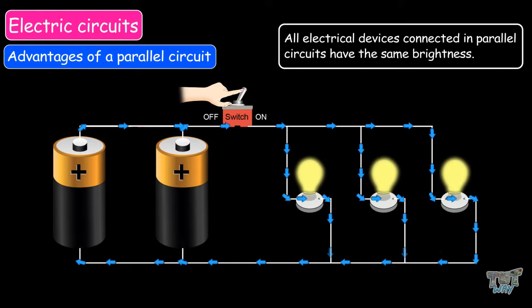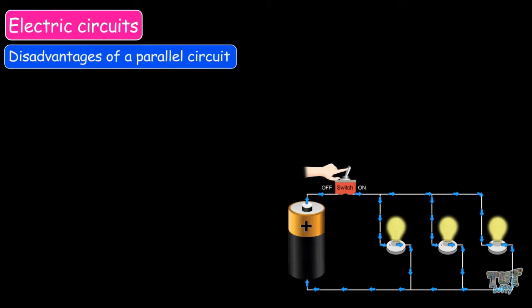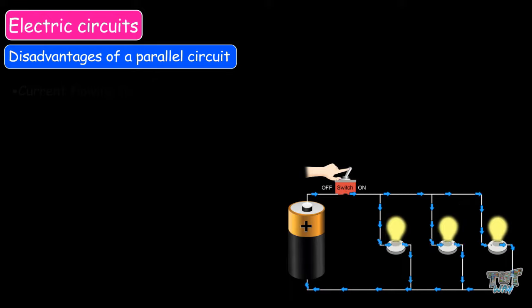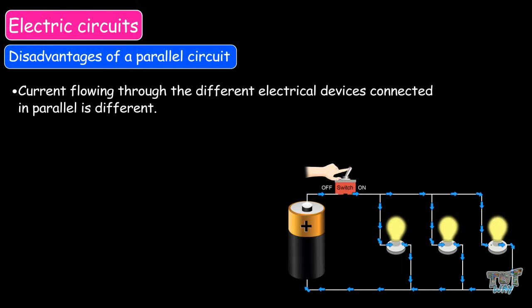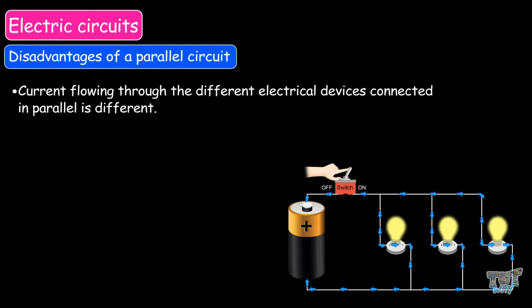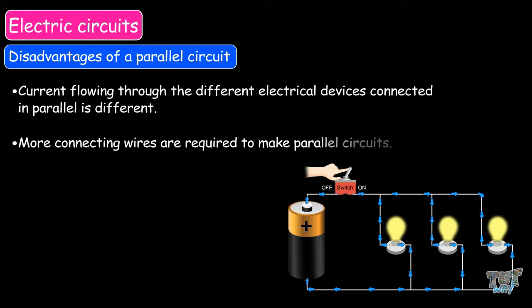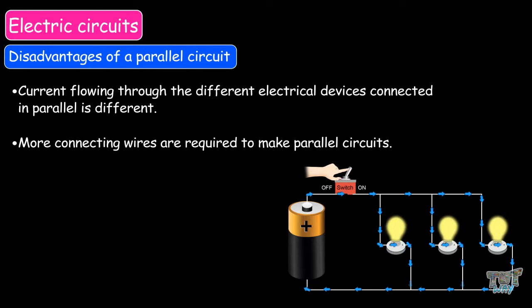Now let's learn some of the disadvantages of a parallel circuit. The current flowing through the different electrical appliances connected in parallel is different. Also, more connecting wires are required to make parallel circuits.